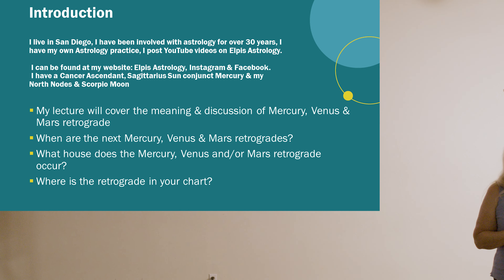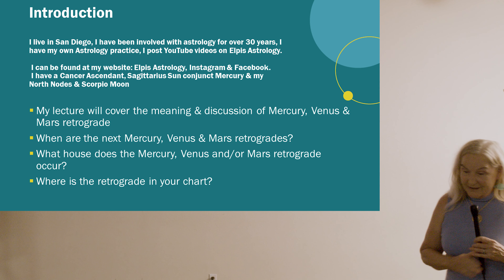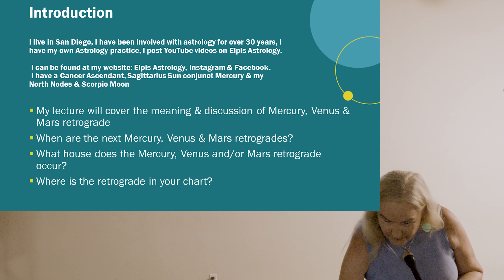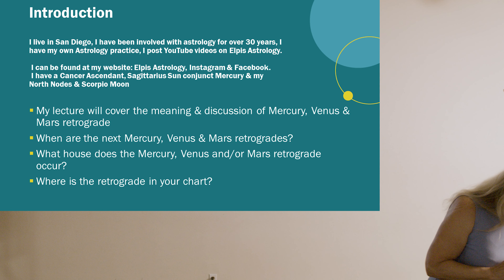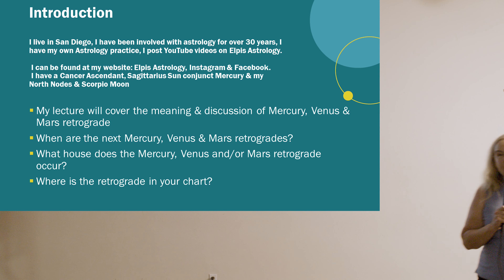My sun is in Sagittarius, along with my north node and Mercury. There's a big stellium in the sixth house for me, and my ascendant is actually in Cancer, and my moon is in Scorpio. I think I have a balance of different things. My Sagittarian side does come out a lot — I do like to take risks.